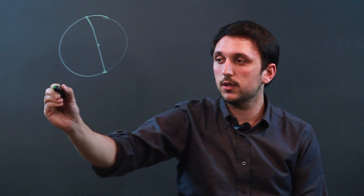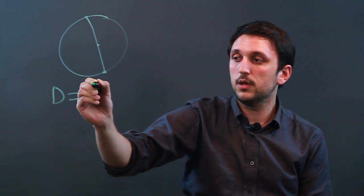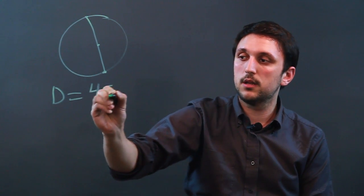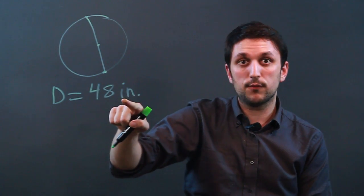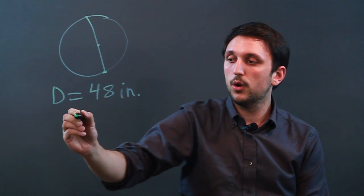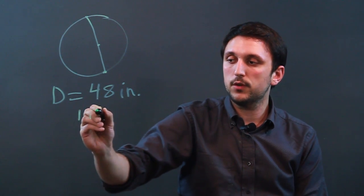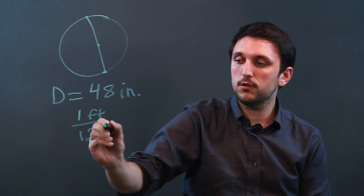So if you know your diameter, let's say your diameter equals 48 inches. Well to convert it to feet we just have to convert inches into feet. So we know that one foot is the same as 12 inches.